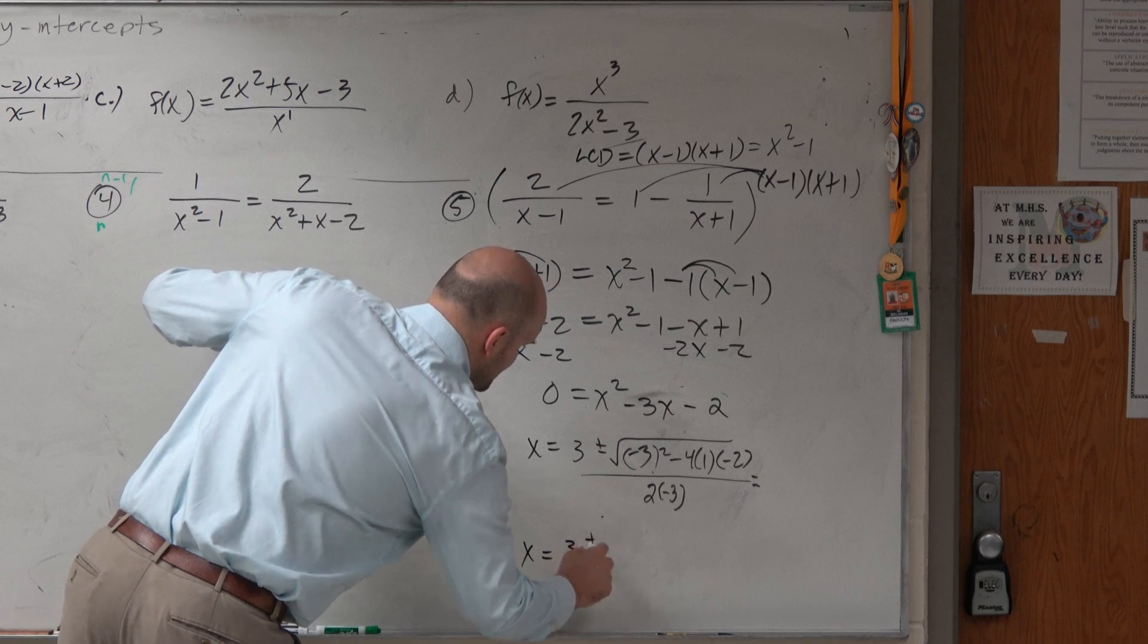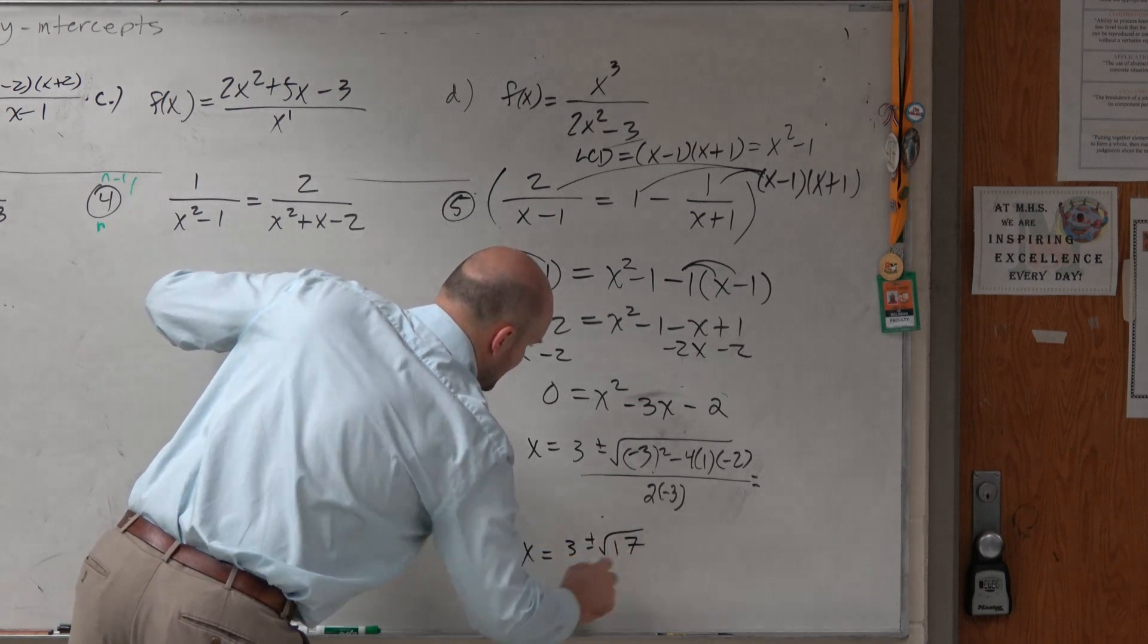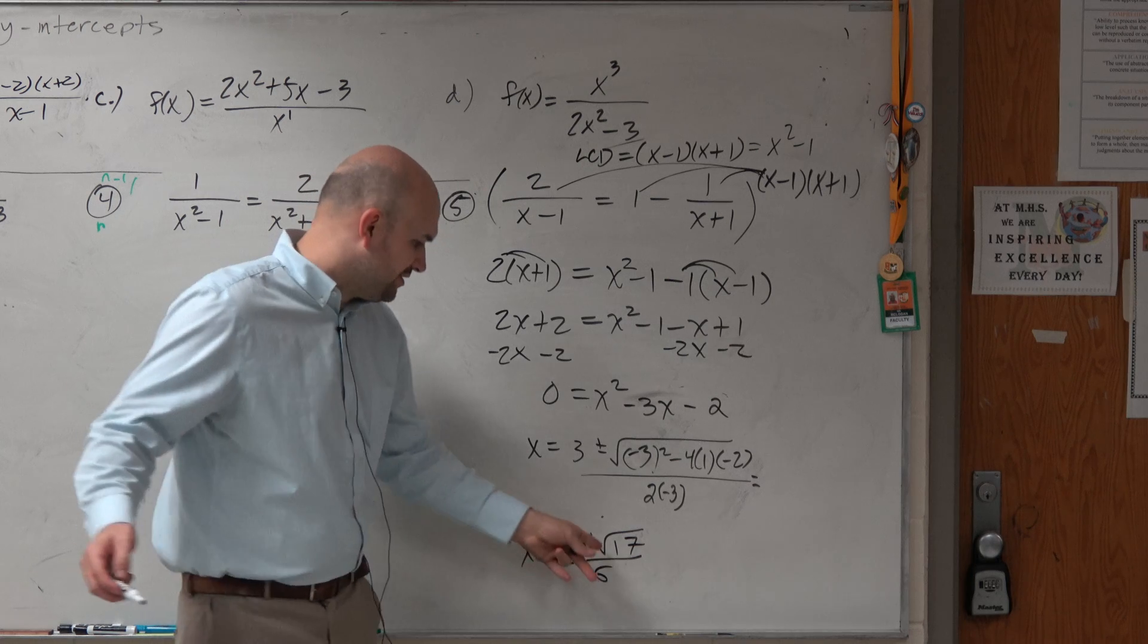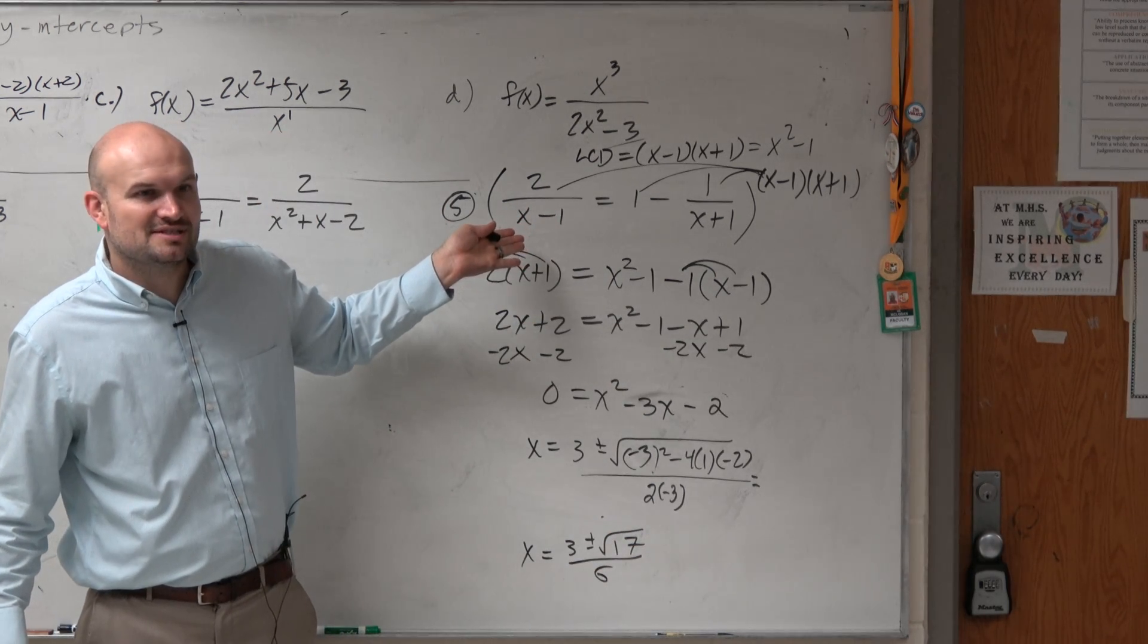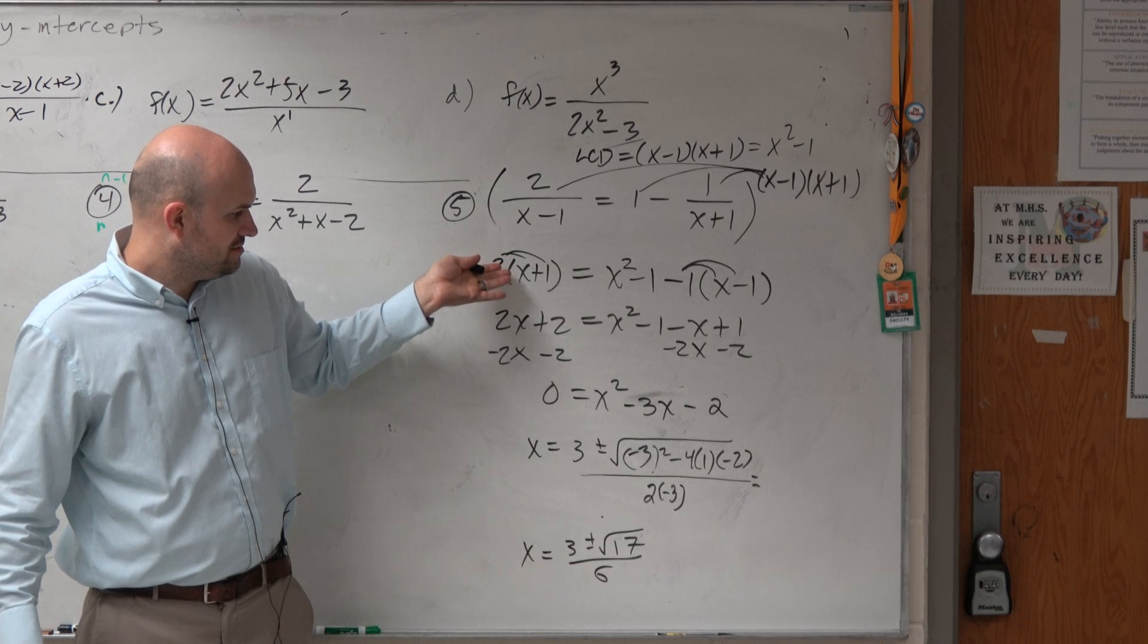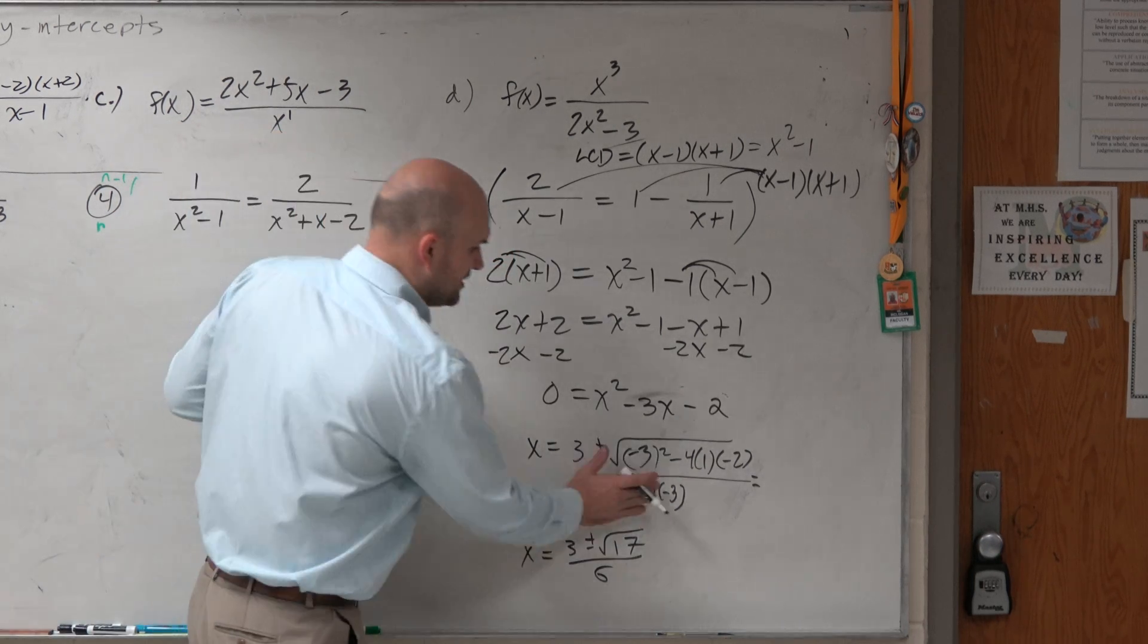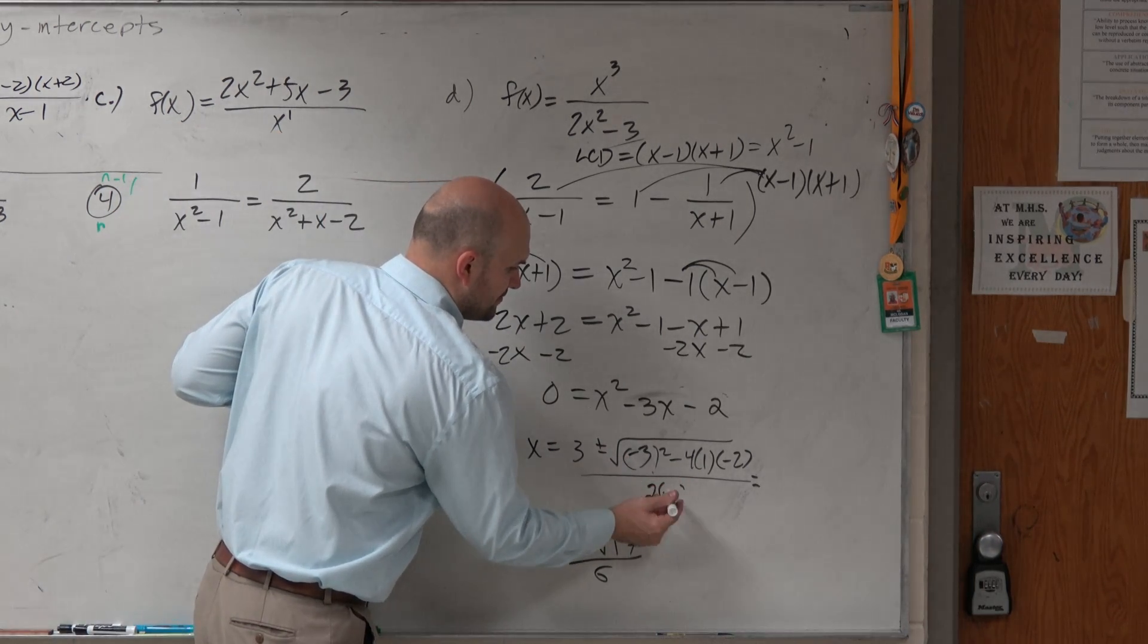That becomes 9, and that becomes plus 8. So that's square root of 17. So that's 3 plus or minus the square root of 17 over 6. And if I plug 3 plus or minus the square root of 17 over 6 in for x, do I have it as equal to 0? So it would be 2. Yeah, so it would be 2.